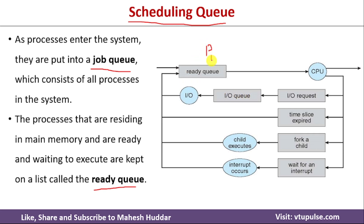The same state diagram can be shown with respect to scheduling queues. With P0 and P1 in the ready queue, one process is selected and allocated CPU time. If a process executes successfully, it goes to the terminated state. If it makes an IO request, it goes to the IO queue. If it creates a child process, the parent waits until the child completes and then returns to the ready queue. If an interrupt is generated, the process waits until the interrupt occurs and then returns to the ready queue.